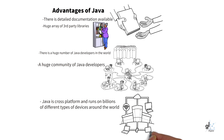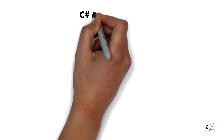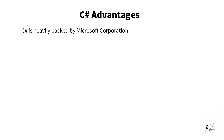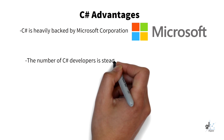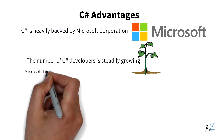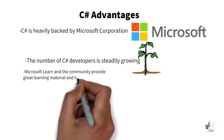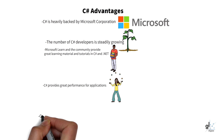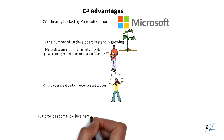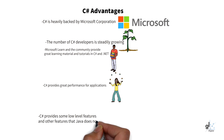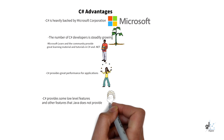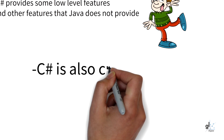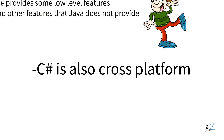Some advantages of using C-Sharp are as follows: C-Sharp is heavily backed by Microsoft Corporation, the largest software company in the world. It is steadily growing in popularity and the number of skilled developers is significantly growing. Microsoft Learn and the community provide great learning material and tutorials in C-Sharp and .NET. C-Sharp and .NET enable your applications to provide great performance. C-Sharp provides some low-level features that Java does not, like using pointers, structs, a better implementation of generics, and the flexibility provided by the LINQ technology. C-Sharp is also cross-platform, so like Java, you can write once and run anywhere.